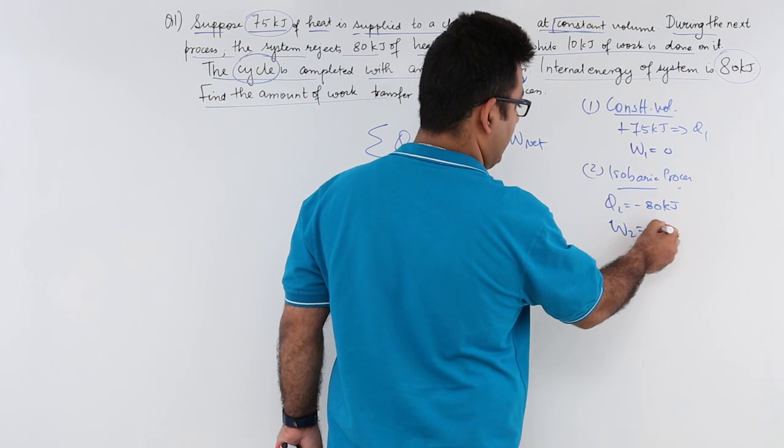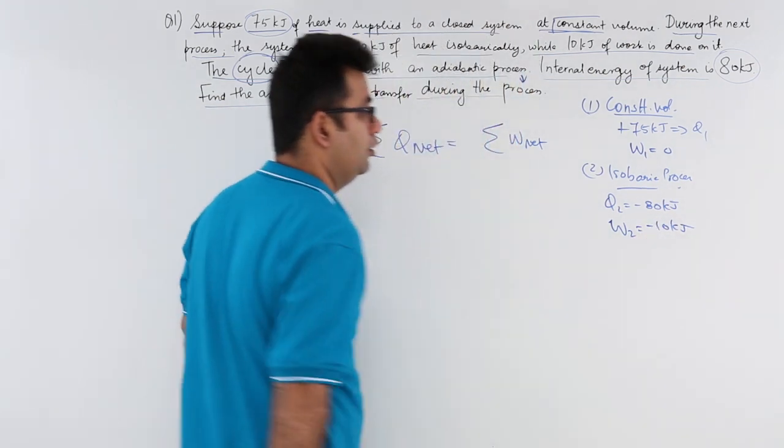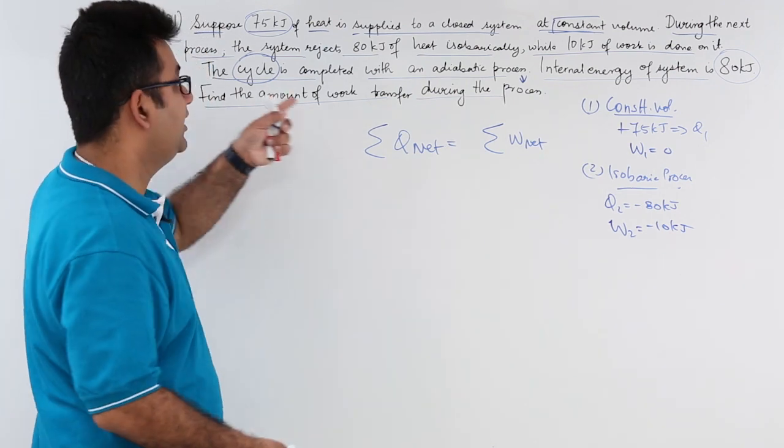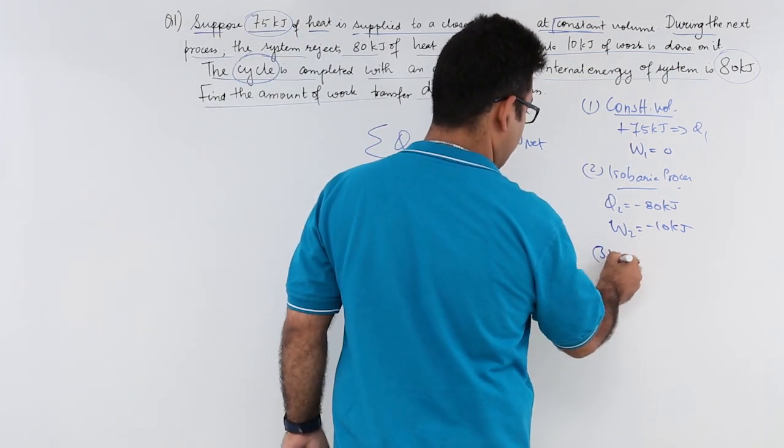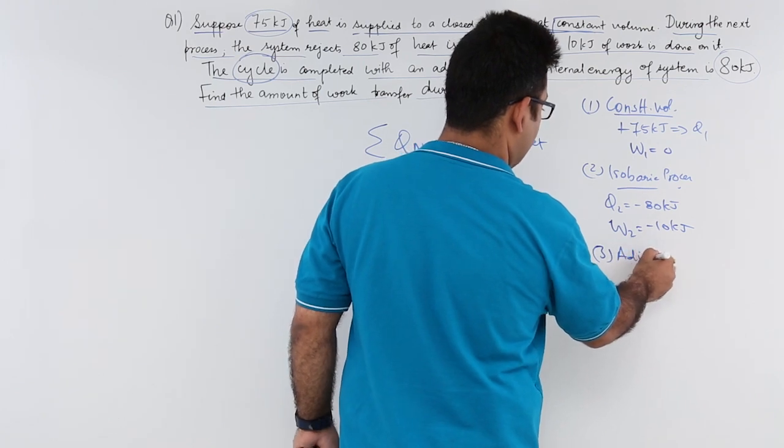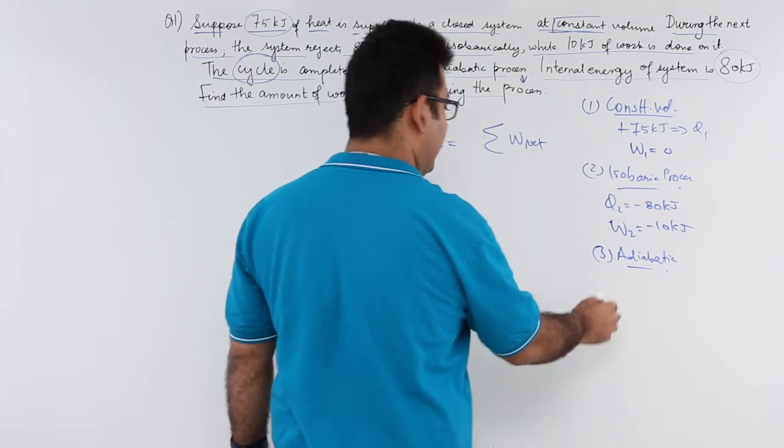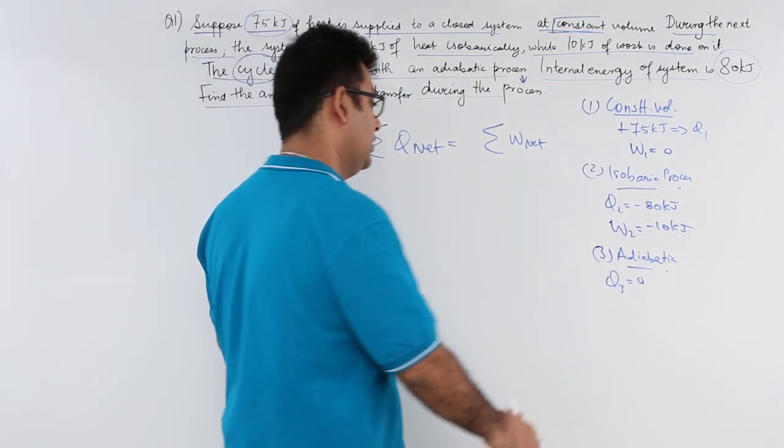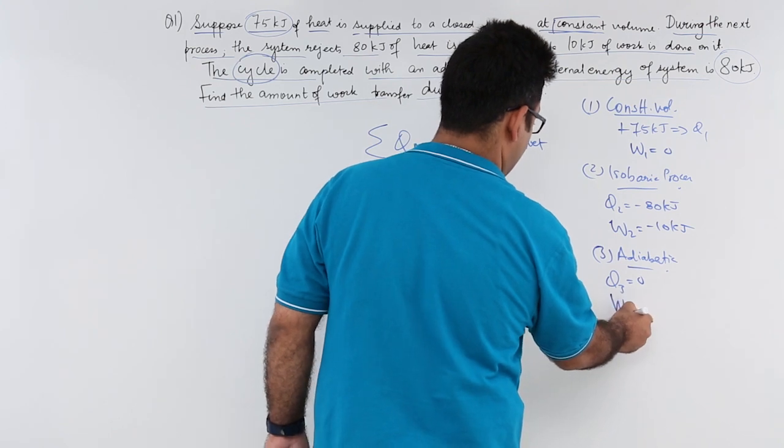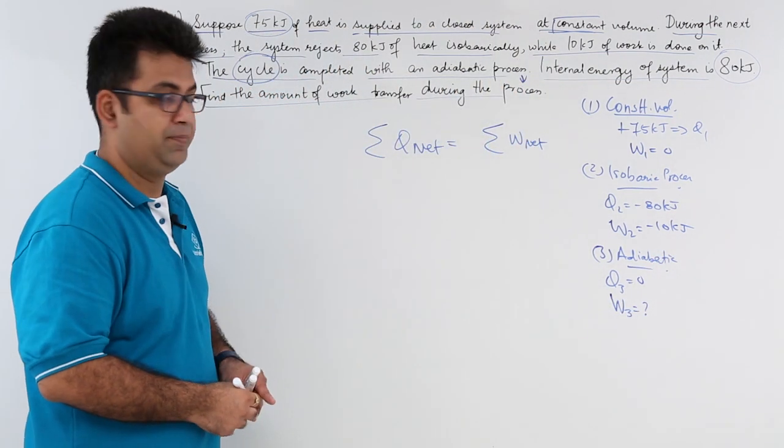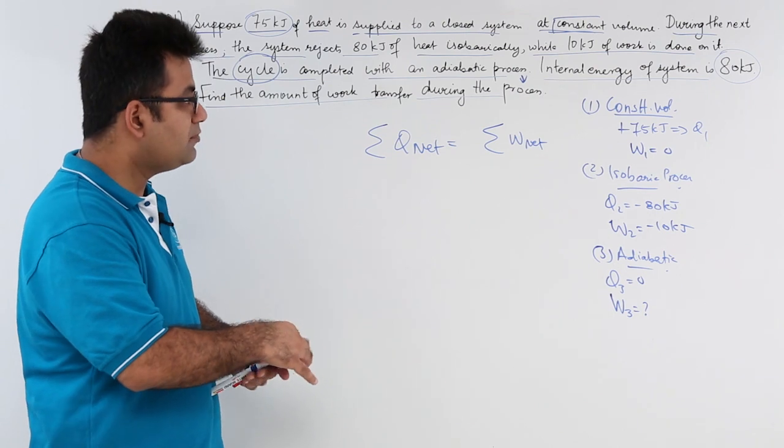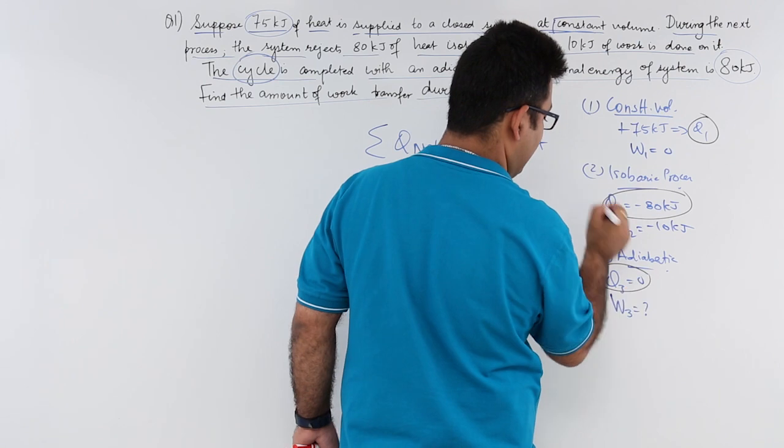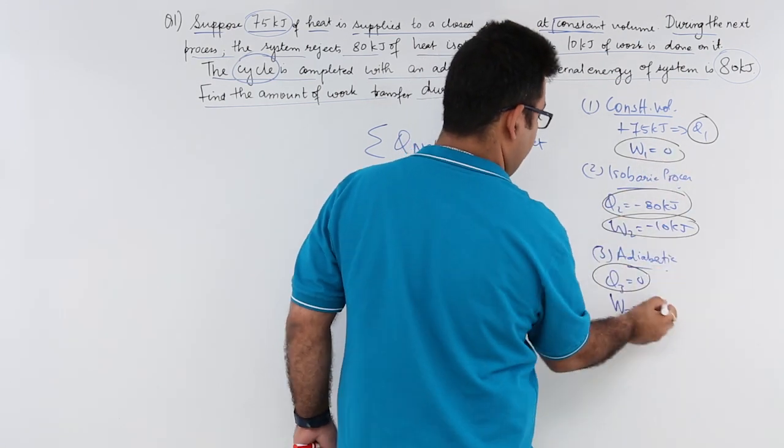The third process which completes the cycle is adiabatic. The adiabatic process has no heat transfer through it, but it does have some work transfer and this is what we need to find out.